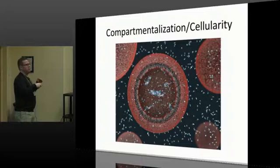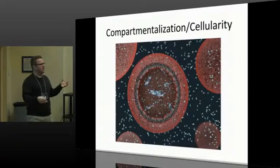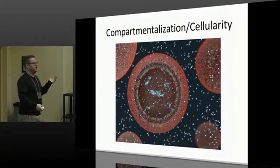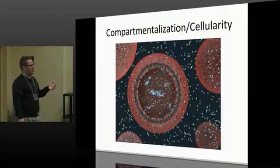At some point in this process, pre-LUCA, you had to have an event where all these processes became compartmentalized — when interesting things are happening, you don't want them to float away. You want them to stay nearby so they can do more interesting things with other interesting molecules. This is a simple vision of a protocell: a basic cell that only has some essential replication and a few metabolic functions.